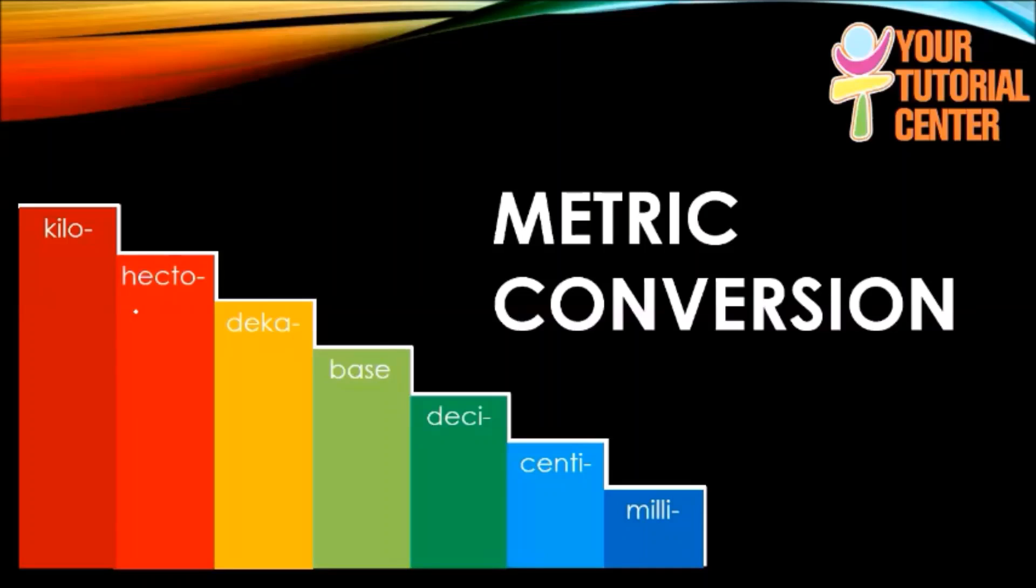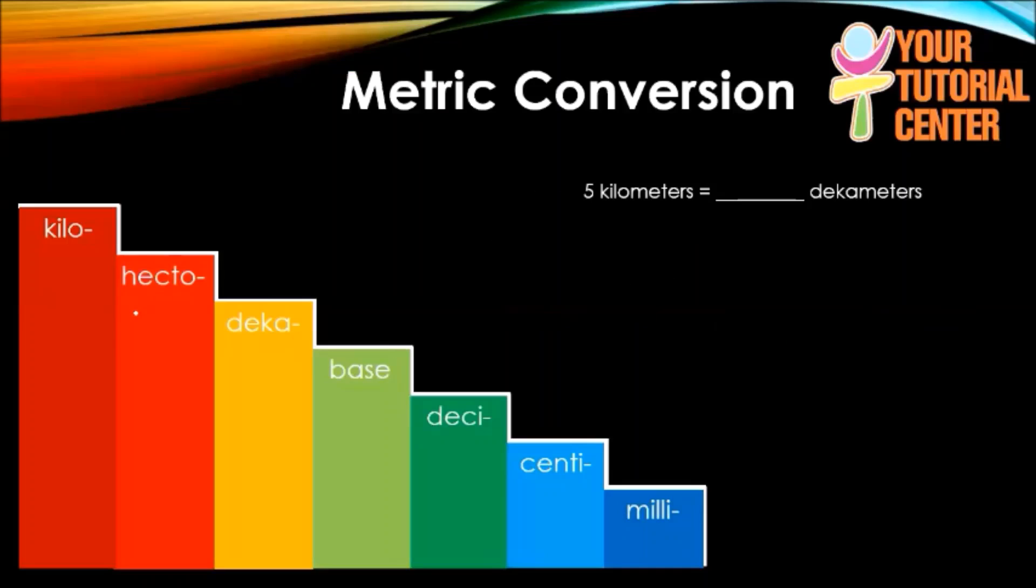Let's look at the first example and see how we use the ladder method. For this first example we have five kilometers and we're trying to convert this to decameters.